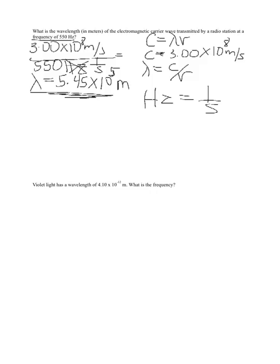Alright, let's look at part 2. Violet light has a wavelength of 4.0 times 10 to the negative 12 meters. We want to know what is the frequency.